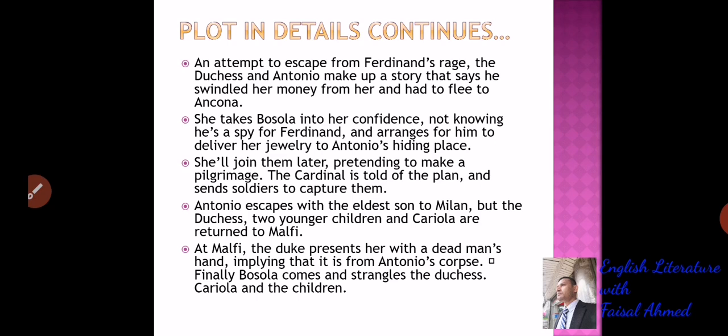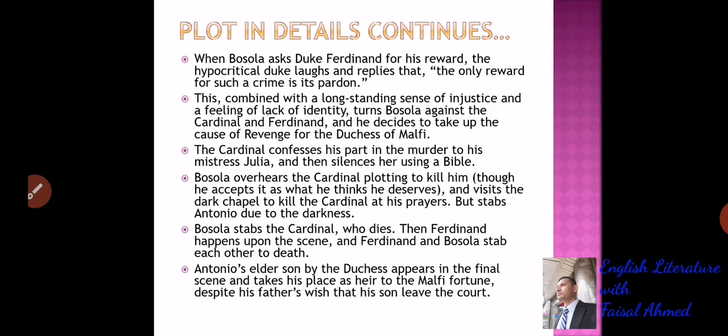Cariola and the children are also killed. When Bosola asks Duke Ferdinand for his reward, the hypocritical Duke laughs and replies that the only reward for such a crime is his pardon. This, combined with a long-standing sense of injustice and lack of identity, turns Bosola against the Cardinal and Ferdinand. In the end he decides to take up the cause of revenge for the Duchess. The Cardinal confesses his part in the murder to his mistress Julia, and then silences her using a poisoned Bible.